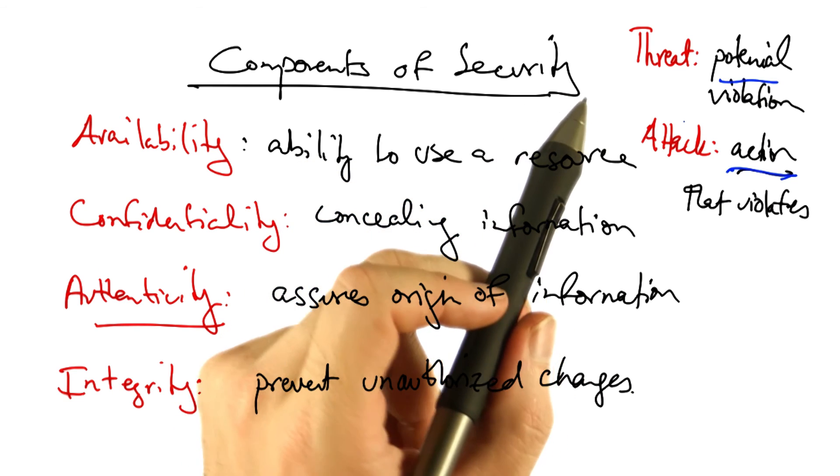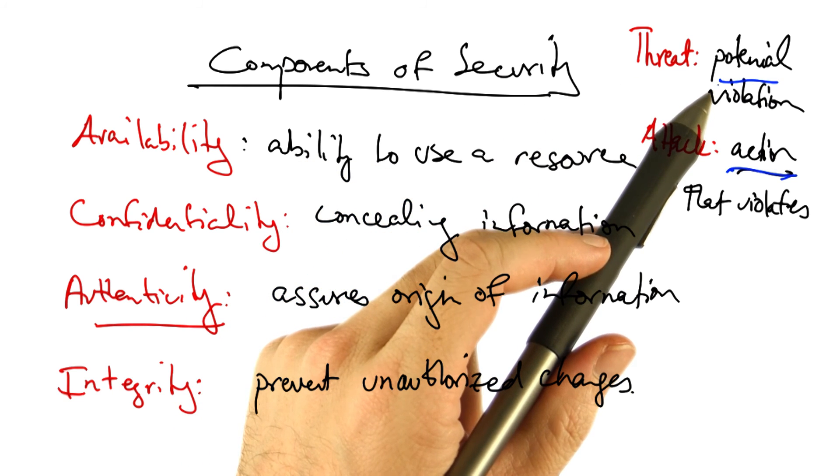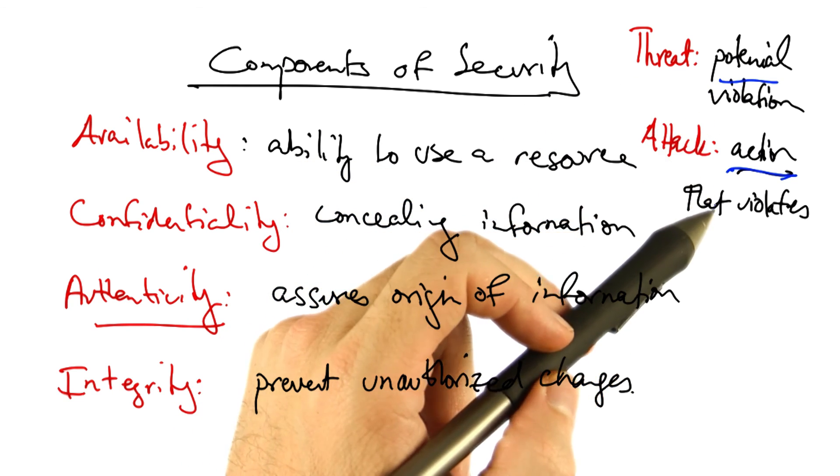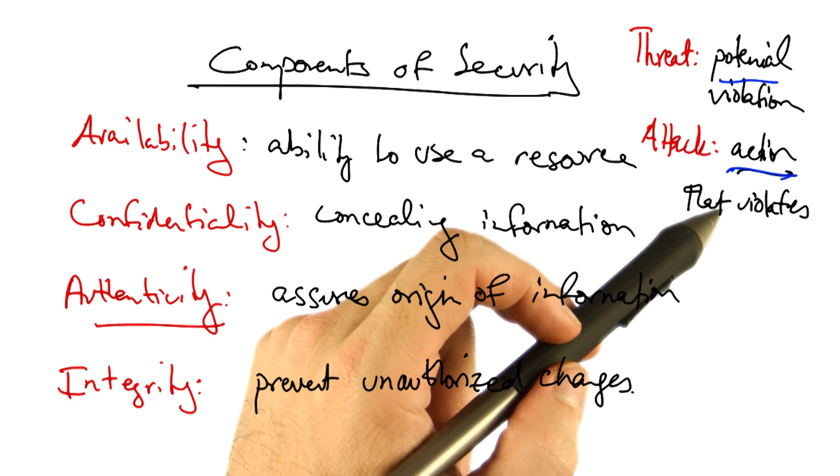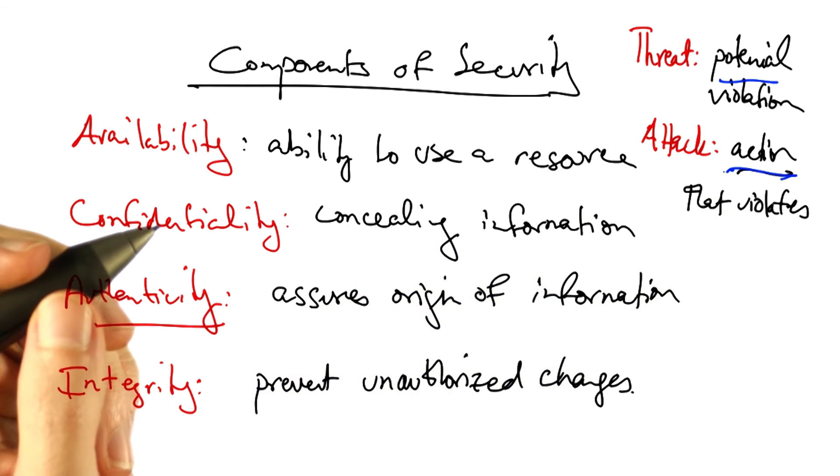So the difference between a threat and an attack is simply the difference between a violation that could potentially occur versus an action that actually results in a violation. Let's look at a couple example attacks on different components of security. Let's start by looking at an attack on confidentiality.